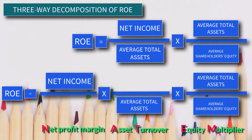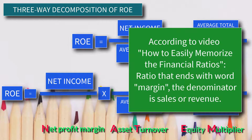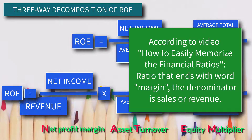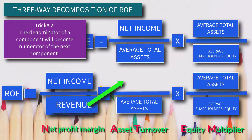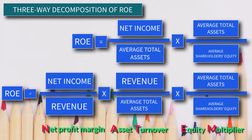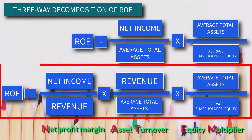How about the first component, Net Profit Margin? According to the video 'How to Easily Memorize the Financial Ratios,' a ratio ending with the word 'margin' has denominator of sales or revenue. So the denominator of Net Profit Margin is revenue. Applying the second trick, revenue as denominator becomes the numerator of the next component. During elimination, we end up with the original ROE formula of Net Income over Average Shareholders' Equity. So this is our formula for three-way decomposition of ROE.